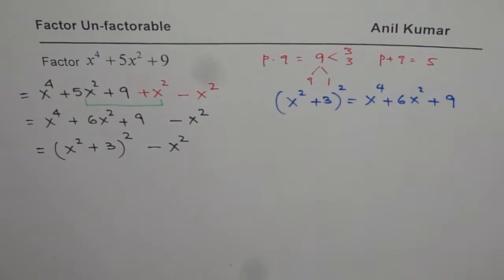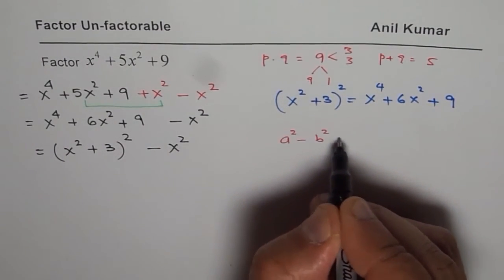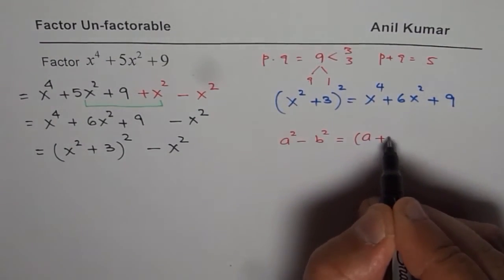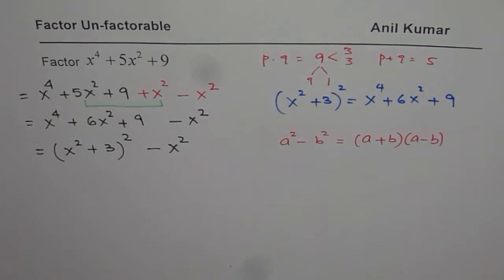Now at this stage we can apply difference of squares. That is a squared minus b squared equals a plus b times a minus b. That is the strategy.